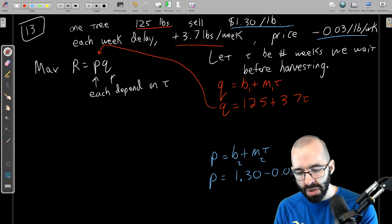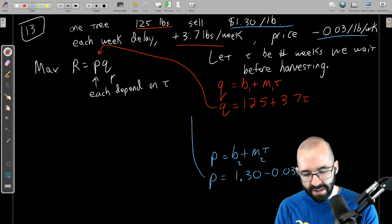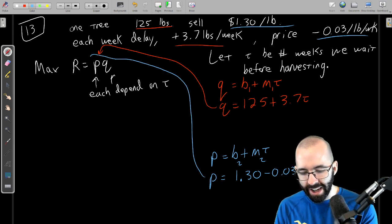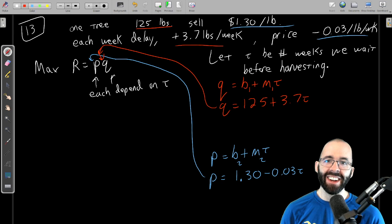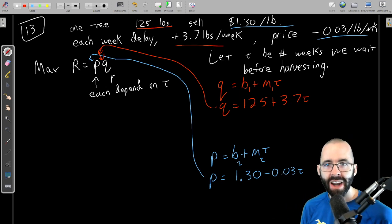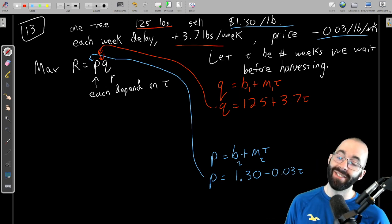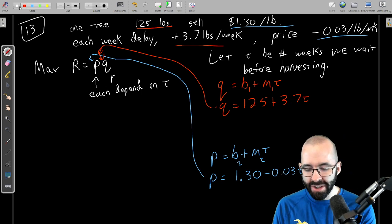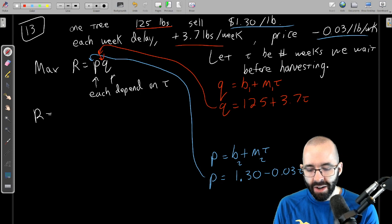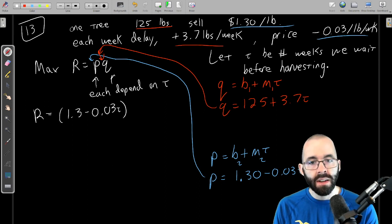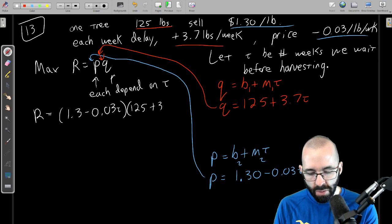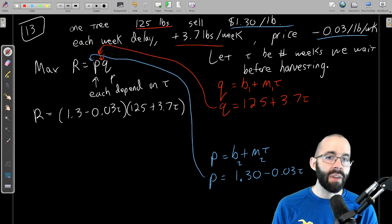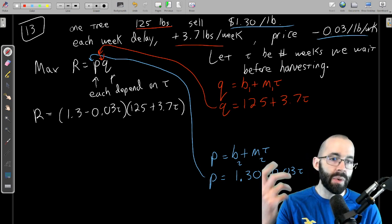So we have the revenue and we know how each quantity depends on time. So if that's the case, put in Q here. Q is that one. I don't know if people say it anymore but there used to be a phrase that says mind your P's and Q's. I really need to. So what does our revenue function look like? Our revenue function is P, which is 1.3 minus 0.03 times t, times Q. Q is 125 plus 3.7 times t. This is our revenue function, this is our quadratic, this is what we want to maximize.